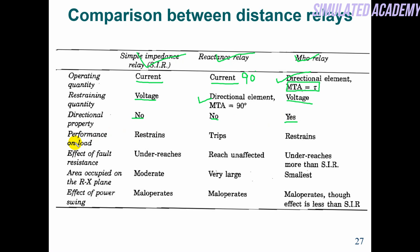Performance on normal load: the Mho relay and simple impedance relay restrain on normal load, whereas the reactance relay trips, which is why we cannot use the reactance relay for transmission protection — a supervisory relay is compulsory for it. Effect of fault resistance: the simple impedance relay under-reaches, the reactance relay does not under-reach because X is not involved, and the Mho relay under-reaches more than the simple impedance relay because the circle is very small.